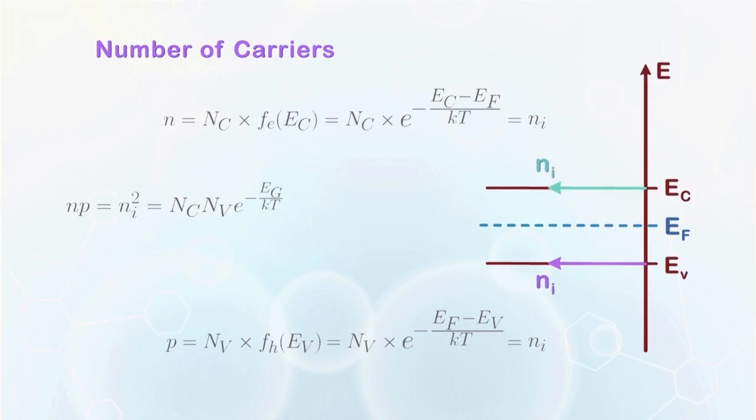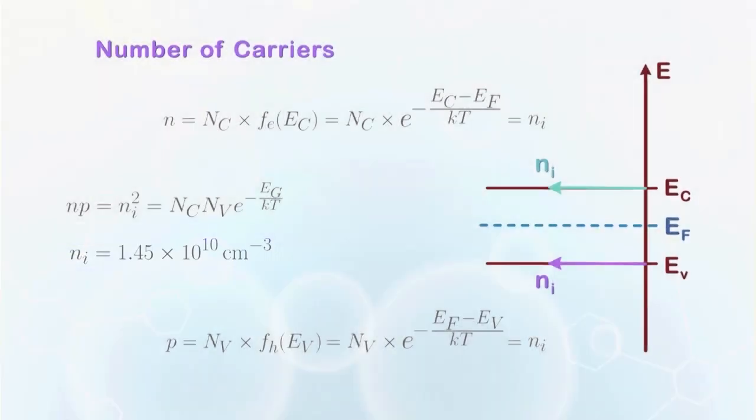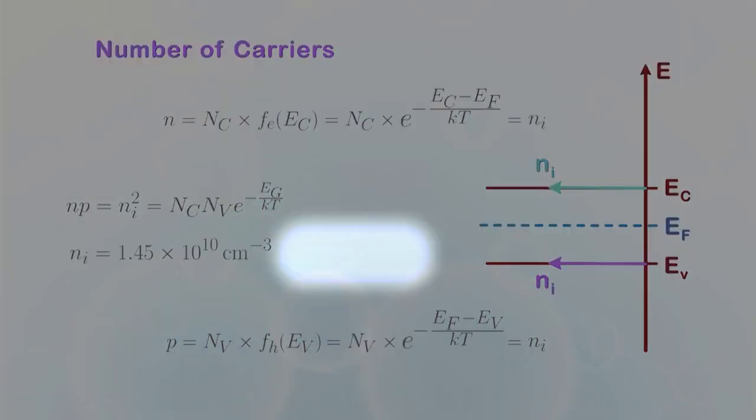To summarize the results, we usually quote the number of carriers of silicon at room temperature, which is 1.45 times 10 to the power 10 per cm cubed. But engineers are lazy, and we generally just remember Ni equal to 10 to the power 10 per cm cubed for simplicity. And this will be the number used in this course.